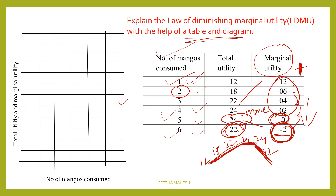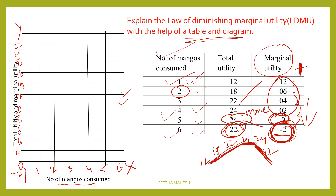To draw the diagram, mark the x-axis and y-axis. On the x-axis, mark the number of mangoes consumed: 1, 2, 3, 4, 5, 6. On the y-axis, mark the utility values: minus 2, 0, 2, 4, 6, 8, 10, 12, 14, 16, 18, 20, 22, and 24.